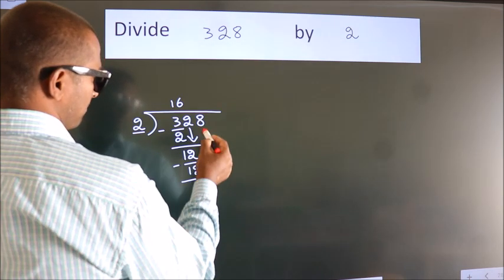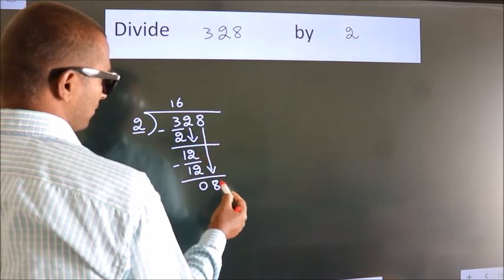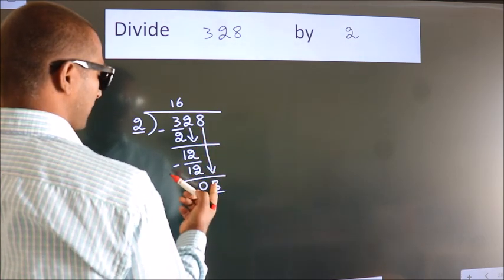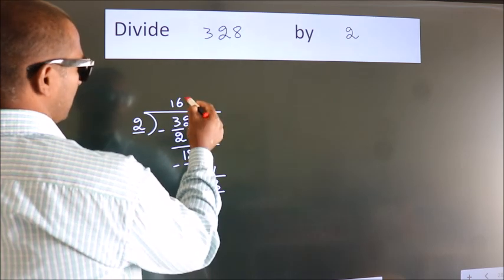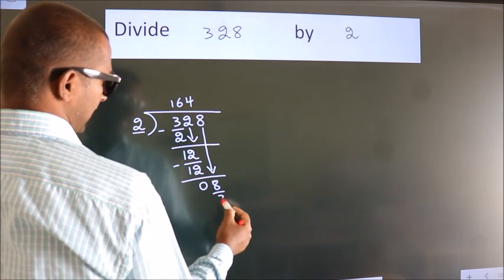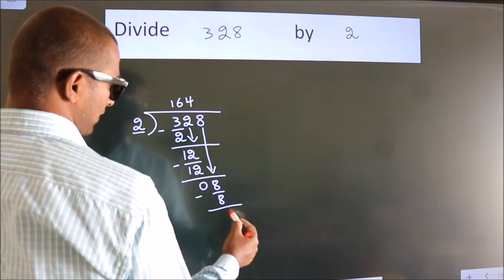After this, bring down the beside number, so 8 down. So 8. When do we get 8? In the 2 table, 2 times 4 equals 8. Now we subtract, we get 0.